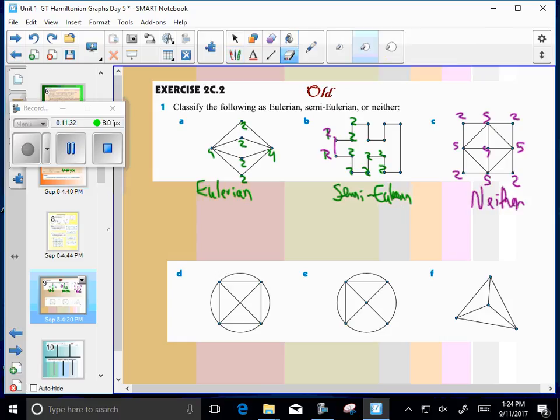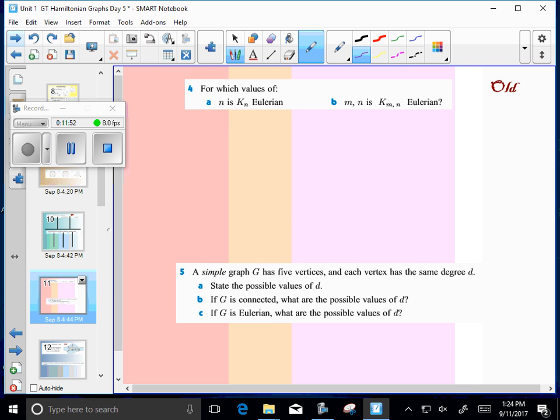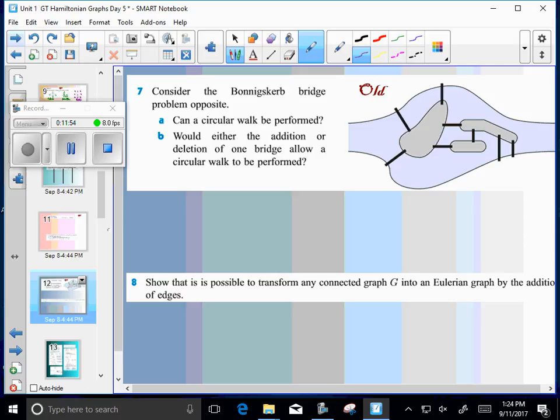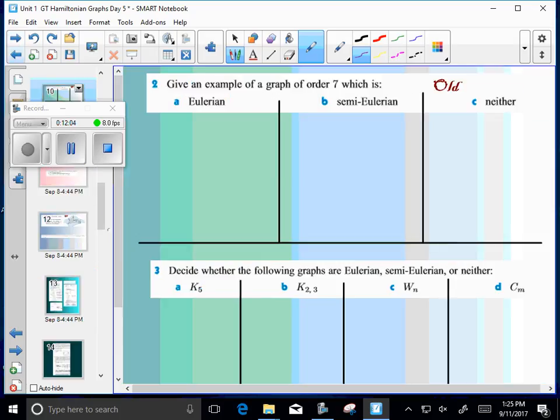Remember, you can have 2 odds, 2 odd degrees, and be semi, but as soon as you have 1, it's neither, and as soon as you have 2, it could be semi. And then I'll let you try these, and answer 2, 3, 4, and 5. 7 and 8 are really cool problems that kind of apply to the bridge problem. So I'll give you about 3 minutes. Go ahead and get started on those.